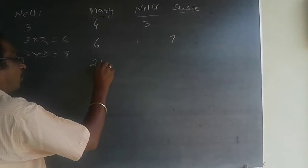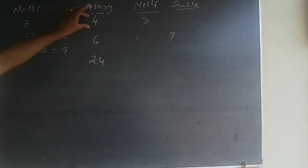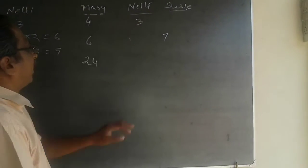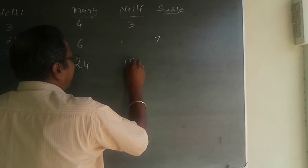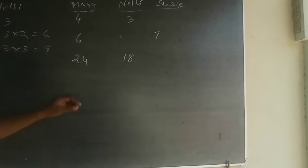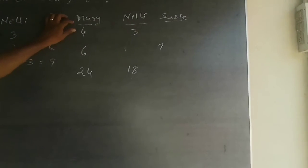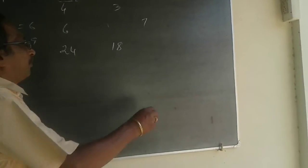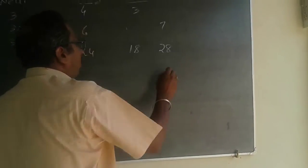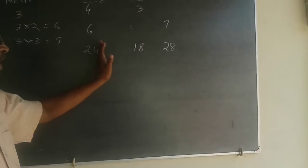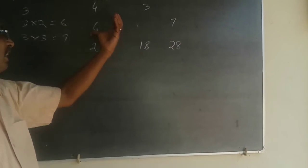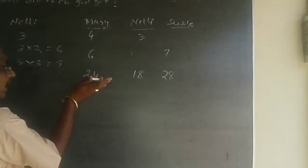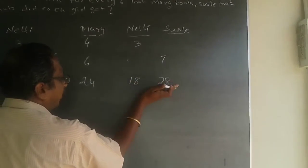Whenever Mary is taking 24. Now what has happened is, this 4 has got multiplied by 6. Therefore, this 3 will have to get multiplied by 6. 3 into 6 will be 18. Now this 6 has got multiplied by 4. This 7 also will have to get multiplied by 4, which will be 28. Normally you will have to take the LCM and proceed, because this is going to be a bigger number. Now the ratio is 24 is to 18 is to 28.